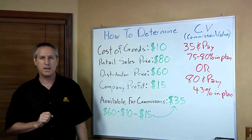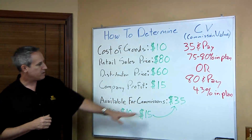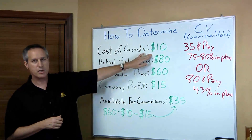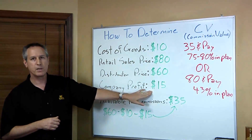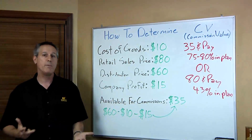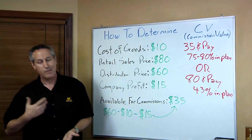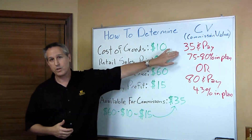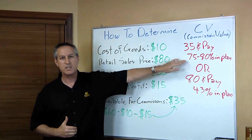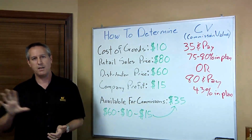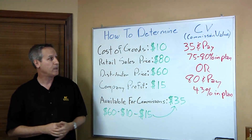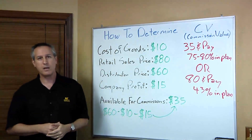We're not going to design comp plans today — that's for another episode. How do we determine the $35? The $60 price paid by distributors, less the $10 cost of goods, less the $15 kept for the company, gives us a commission value of $35. My recommendation: set your CV at $35, and then design the compensation plan to pay out 75 to 80% of that. In a future episode I'll explain why we don't pay out 100% — there are some unique reasons for that.